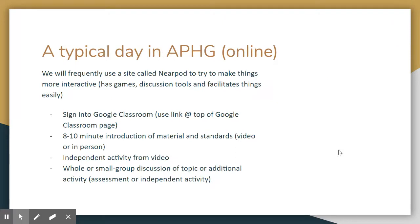In a typical day in AP Human Geography, students sign into Google Classroom using the link at the top of the page. There is a brief eight to ten minute introduction of the material and standards, and so far all of those have been pre-recorded, which I'll probably continue to do because I like having extra videos of instruction for students who aren't there or to use in the future. Students are usually assigned an activity at the end of the video that they'll do independently.